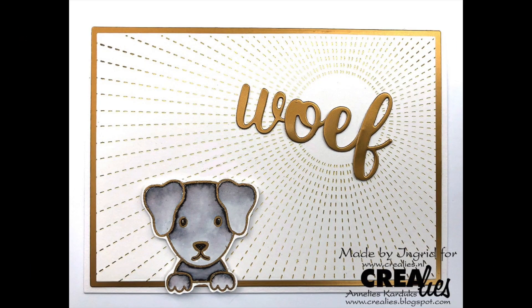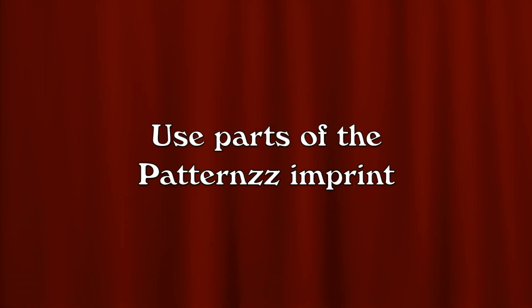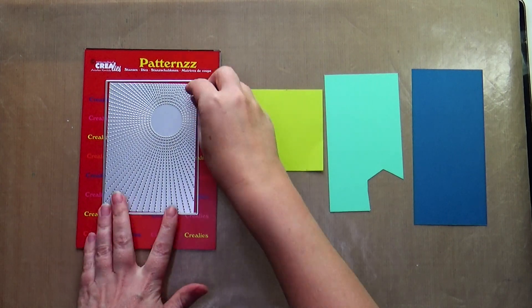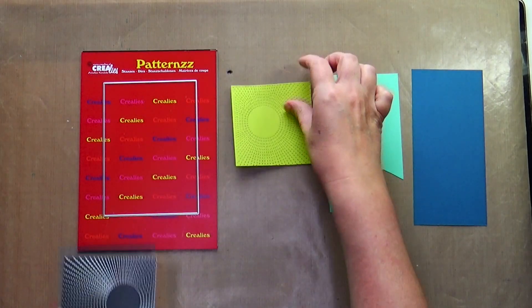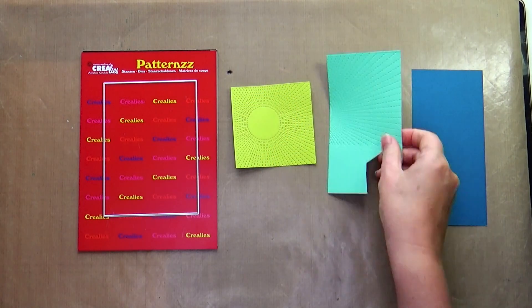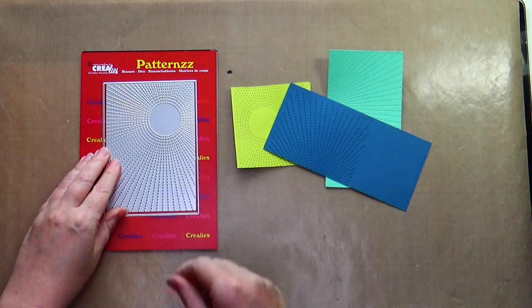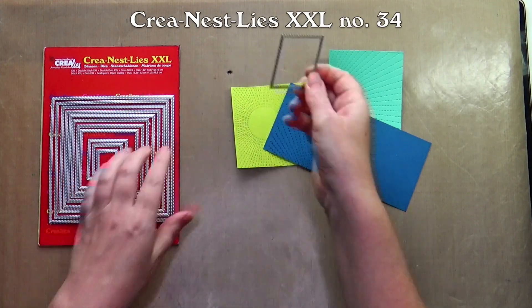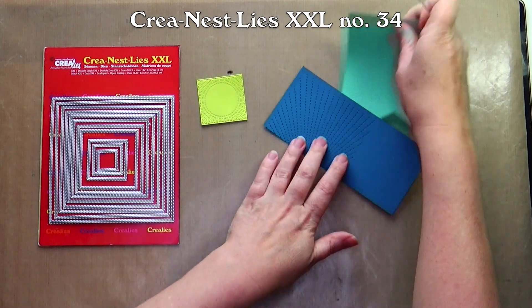Ingrid made this lovely card. You can also die cut a part of the patterns on different colors of cardstock. Die cut those with another die. I use Crealies Nestlie XXL number 34.